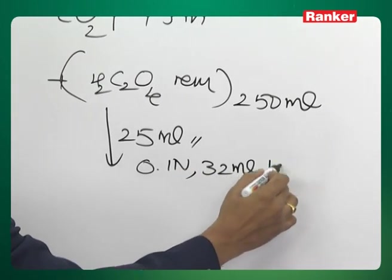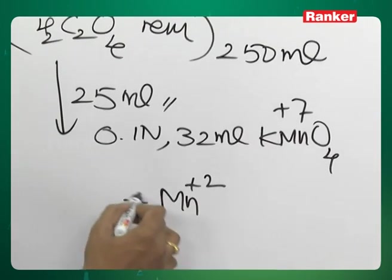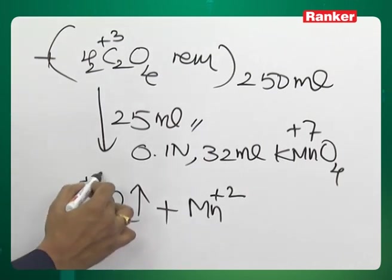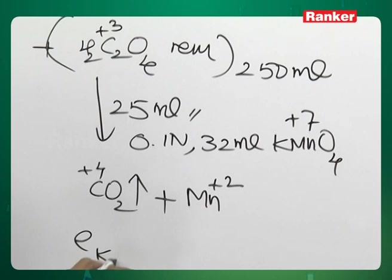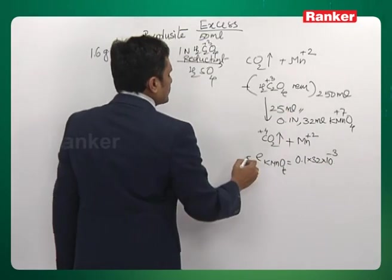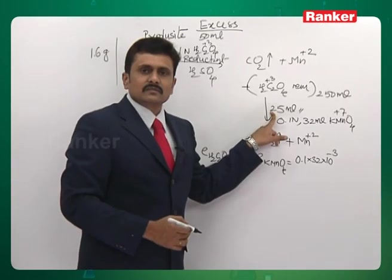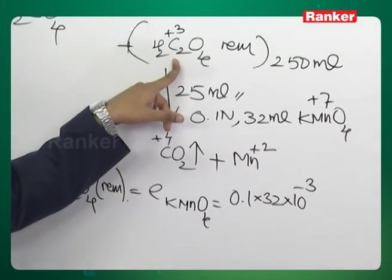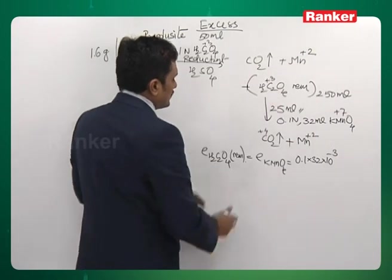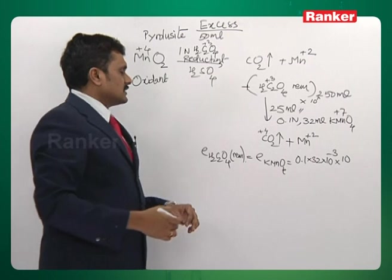In the back titration, 32 ml of 0.1 normal KMnO₄ was used. Manganese changes its oxidation state to +2 in acidic conditions, and the carbon product is CO₂. The gram equivalence of KMnO₄ equals normality times volume in liters, which equals the equivalence of oxalic acid remaining in 25 ml. Since the original solution is 250 ml, multiply by 10 to find the equivalence in 250 ml.